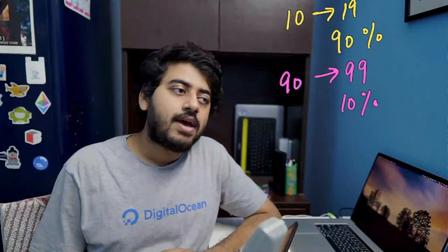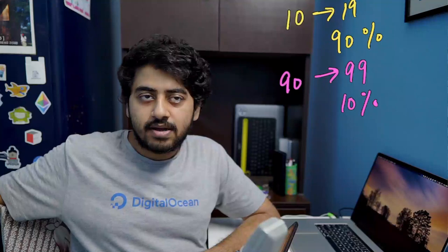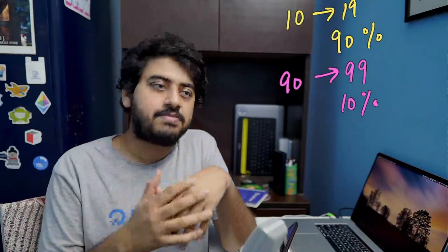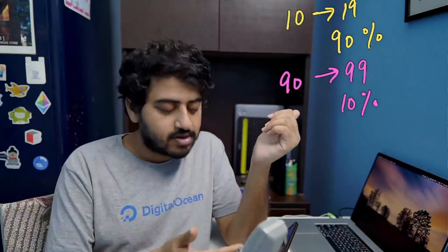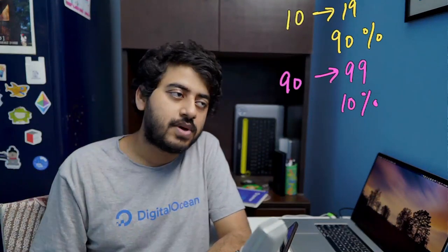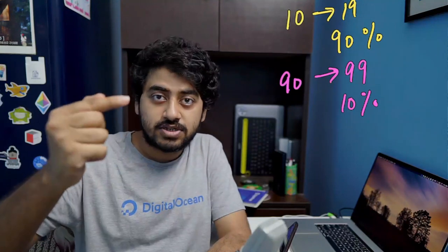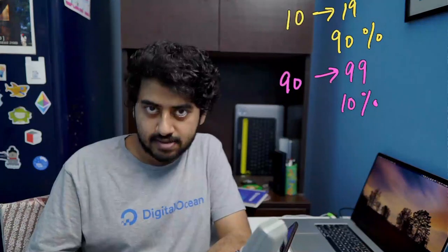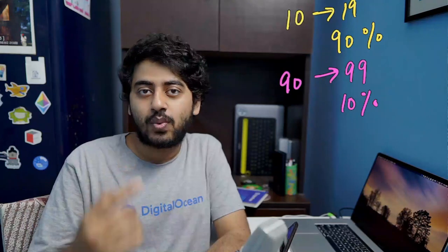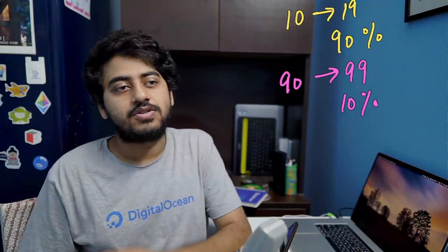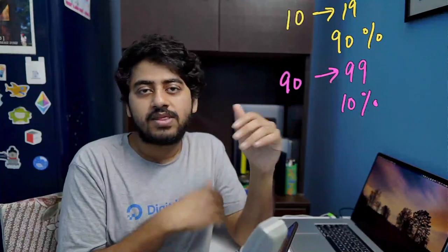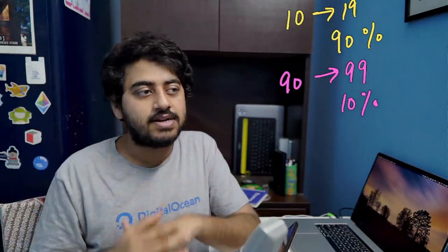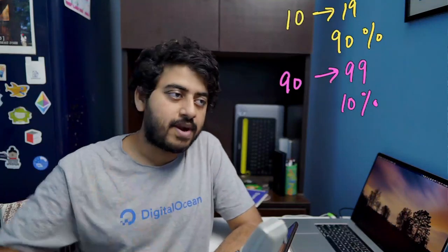If something is growing at 10% per day, when it grows from 10 toward 19, the value starts with digit 1 for several days. But when the value reaches 90 and grows 10%, it immediately becomes 99, and the next day it starts with one again. So numbers starting with one, when growing at a certain rate, remain starting with one for a longer period than numbers starting with a higher digit. That's why the distribution graph takes that shape.